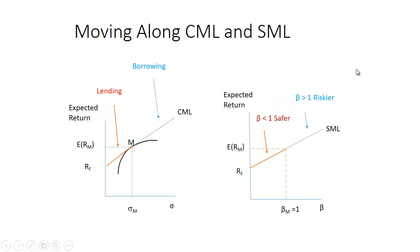When you move along the capital market line, you're still buying the same portfolio M — some combination of M, the risky portfolio consisting of all risky assets held in their market-value proportions, and the risk-free asset. If you want to be conservative, you lend money by putting some in treasury bonds and some in the risky portfolio. At point M, all your money is in the risky portfolio. Beyond M, you borrow at the risk-free rate to buy more of the market portfolio.